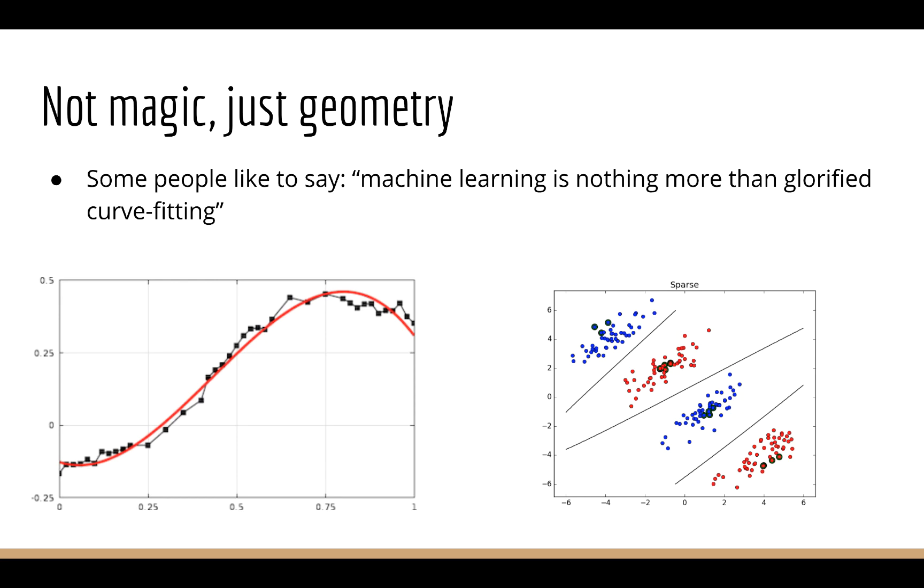So I hope this lecture helps to put machine learning into perspective for you. Machine learning is not magic. In fact, in reality, it's just a geometry problem. Some people like to say machine learning is nothing more than glorified curve fitting. But whatever you want to call it, the truth is this. Regression is nothing more than taking a bunch of dots and finding a curve that fits nicely to those dots. Classification is nothing more than taking a bunch of colored dots and finding the curve that goes between them.